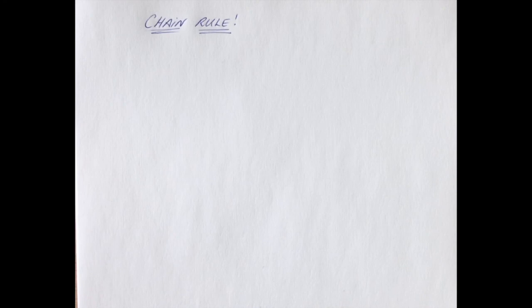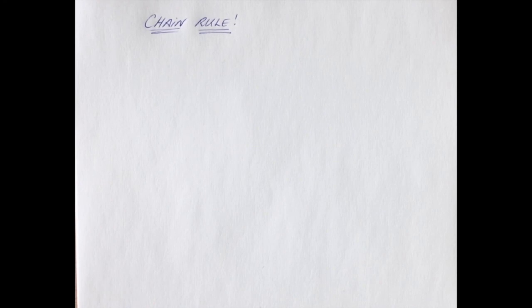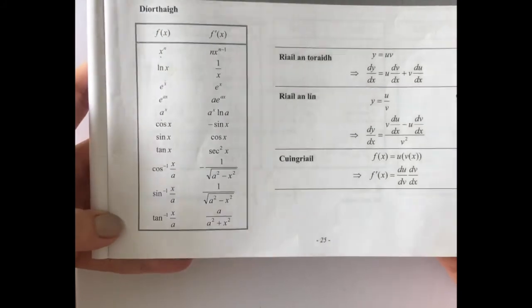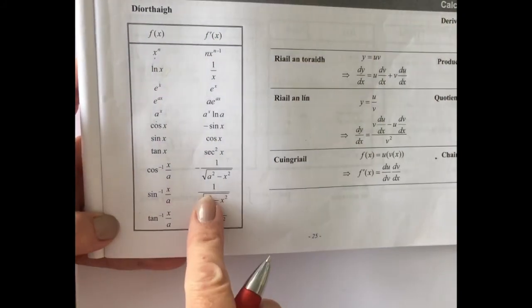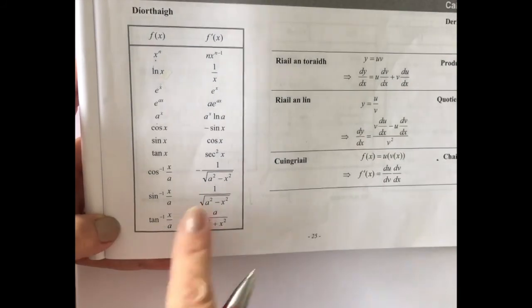In this video we're going to look at chain rule. This is the process of differentiation where you may have more complicated functions to differentiate and so you have to apply chain rule. We're going to go through this bit by bit, looking at page 25 of your log tables, where you have lots of information about differentiating certain functions.